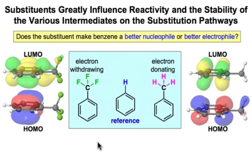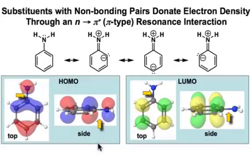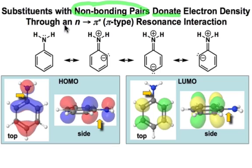Now let's look at substituents that interact with the π system through resonance. First, we'll look at electron donating substituents, which usually involve non-bonding pairs of electrons on substituents bound to the benzene ring. A typical example is the electron lone pair on the nitrogen of aniline. We can see that it donates its pair of electrons into the ring by an n to π* π-type interaction, creating the resonance contributors seen here.